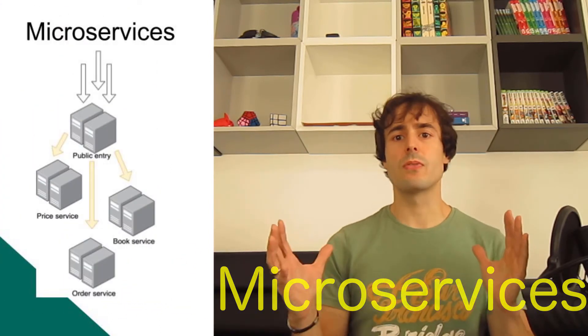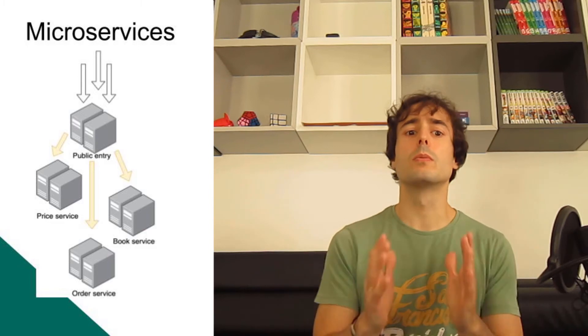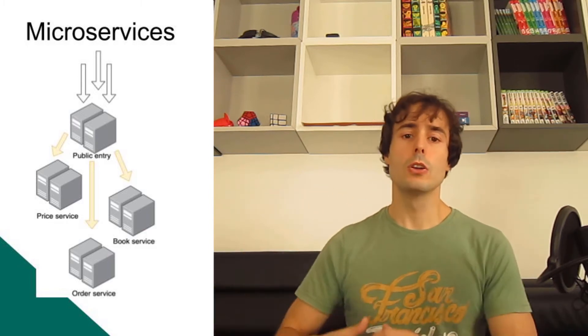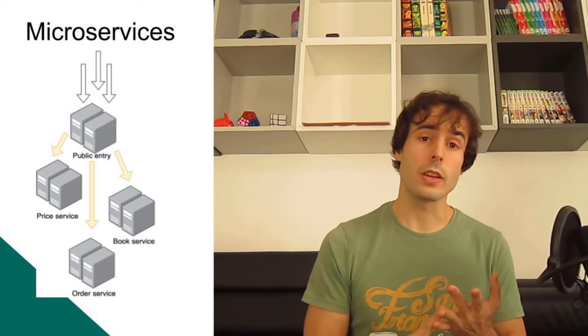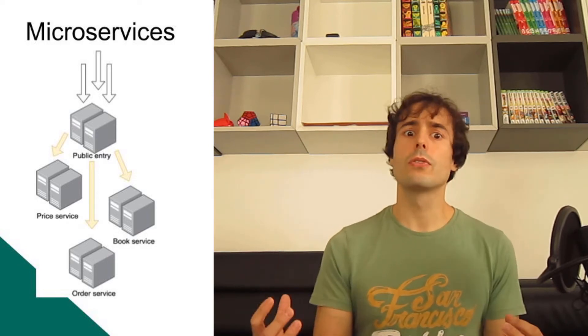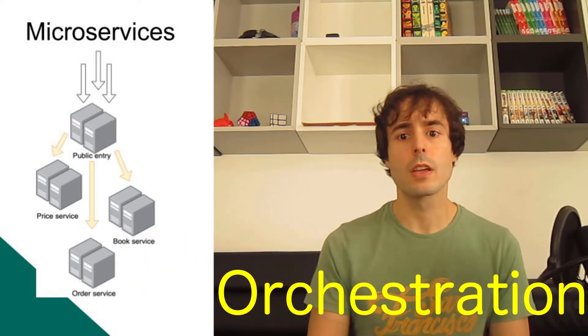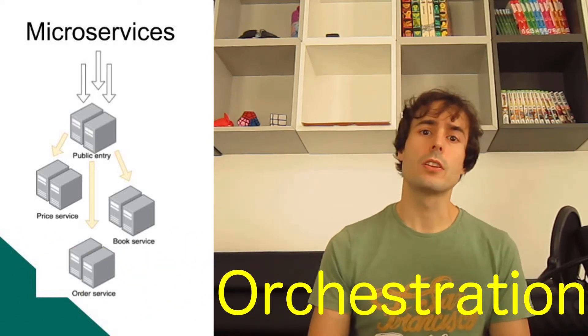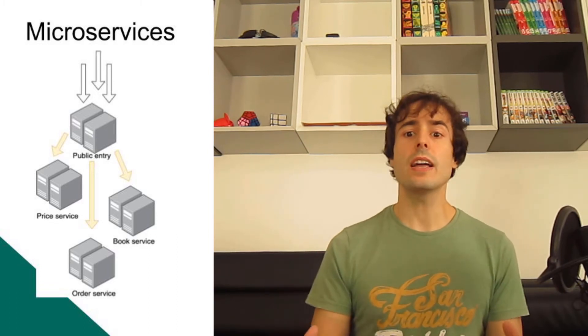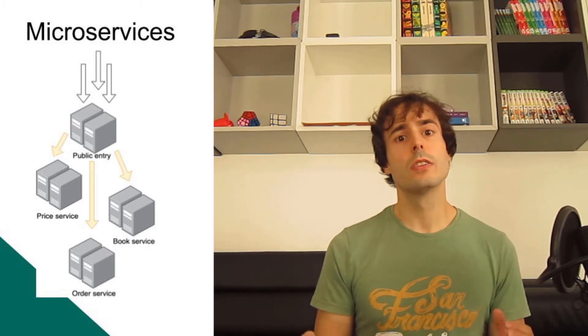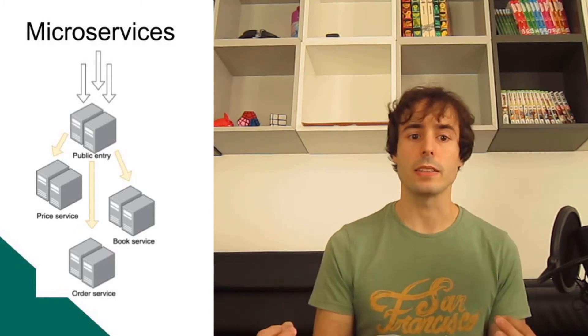Instead of having one big fat application, I will split it into multiple small applications: to search the book's information, to calculate the prices, to save the orders, to send the emails, etc. But all of those microservices will need orchestration - when to call each one, handle permissions, and build a proper response for the user. For that, I will need some kind of router, a public entry, a public backend.